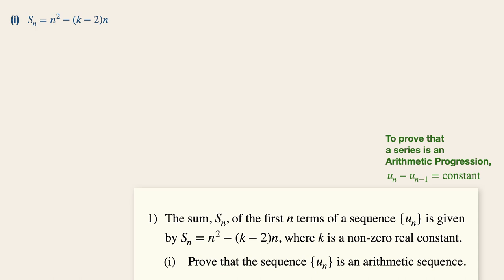Now in order to find the nth term, let's take the sum of the first n terms minus the sum of the n-1 terms, or in other words, the sum of the sequence just before the sum of the first n terms, as you can see from the screen over here.